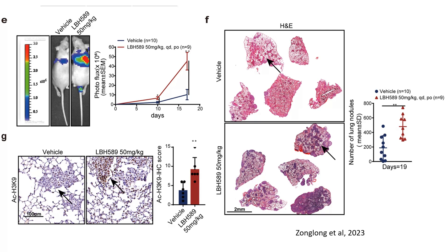Panel G focuses on immunohistochemistry staining for acetylated histone H3K9, a marker of transcriptional activation. In LBH589-treated mice, there is increased acetylated H3K9 staining in lung tissue, as highlighted by the arrows. This is quantified in the bar graph, showing significantly higher acetylated H3K9 IHC scores compared to vehicle-treated mice, suggesting that LBH589 may be promoting gene expression changes associated with metastasis.